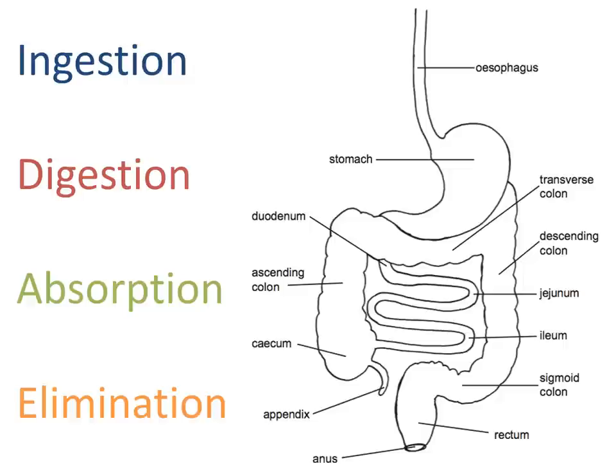After food has been digested, it must be absorbed into the blood or lymphatic system of the body before it can be utilized by different parts of the body. The process whereby digested food is transferred from the lumen of the gut into the circulatory system is called absorption.